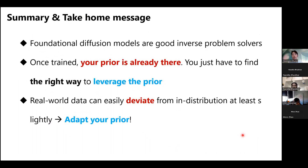I think those were the main points I really want to stress. First, foundational diffusion models are good inverse problem solvers — they're versatile, robust, and flexible. Second, once you have access to that foundation model, your prior is pretty much already there; what you have to do is find the right way to leverage it. Third, if your training and testing distributions are different, there's a good way to adapt your diffusion model to correct for this discrepancy. I'd be happy to answer questions.